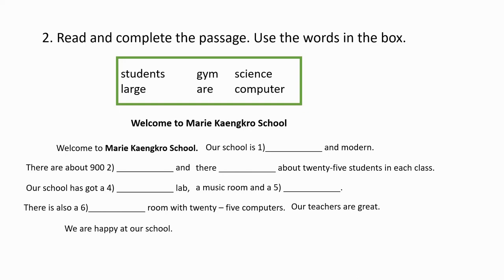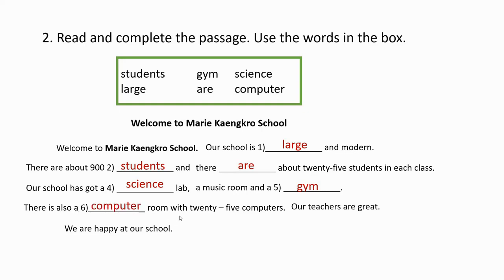Answers. Welcome to Maori Kangaroo School. Our school is large and modern. There are about 900 students and there are about 25 students in each class. Our school has got a science lab, a music room, and a gym. There is also a computer room with 25 computers. Our teachers are great. We are happy at our school.